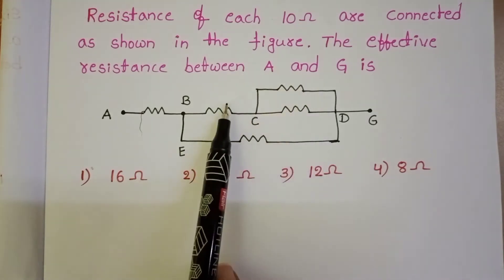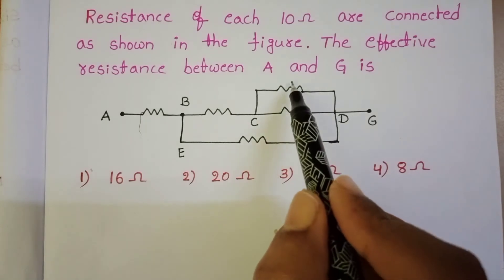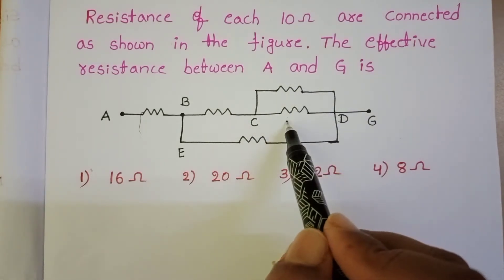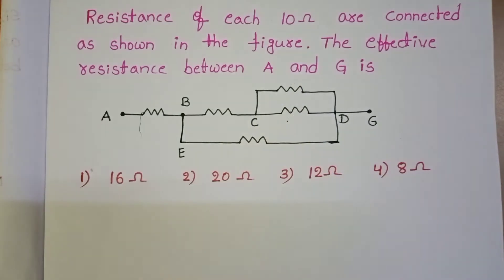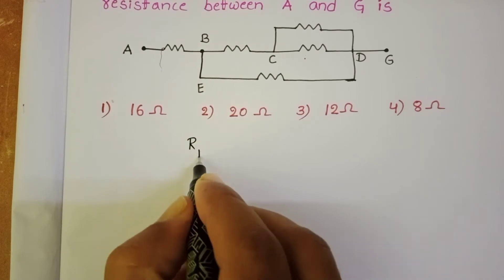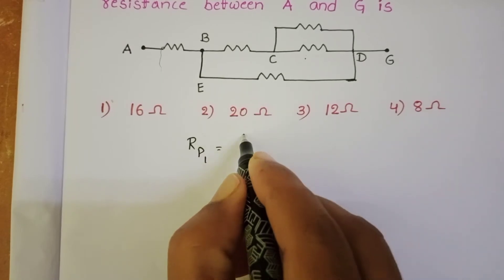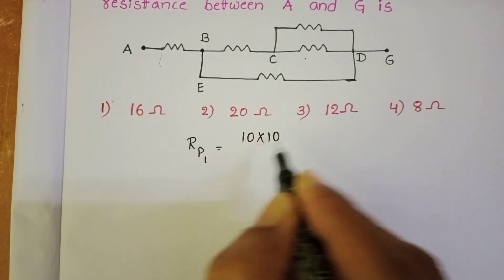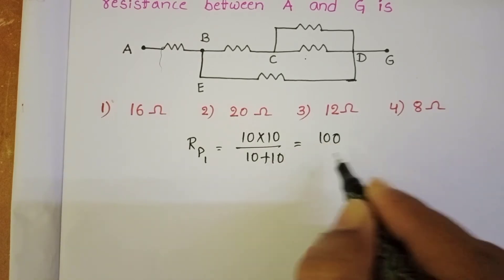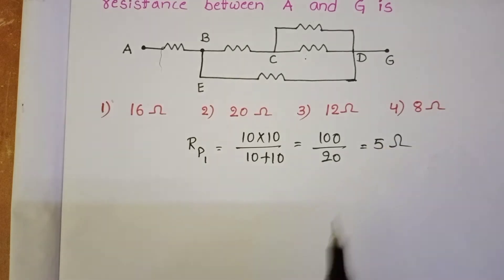The resistance of each resistor is 10 ohm. First, these two resistors are connected in parallel. The equivalent resistance is R1 into R2 divided by R1 plus R2, which gives 10 into 10 divided by 10 plus 10, equals 100 by 20, that is 5 ohm.